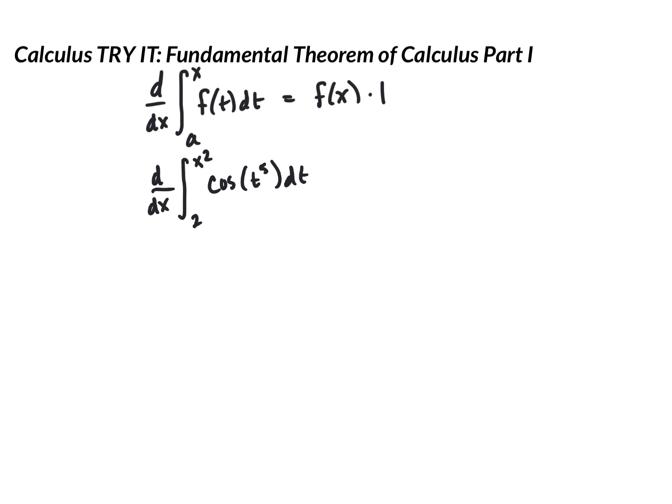So, here, if we are asked to find the derivative of the integral from 2 to x squared of the cosine of t to the 5th power, the easiest way to do this is just to say, well, it's going to be that original function, but we're going to have plugged x squared, the bound, into the function. It's still to the 5th power because it was t to the 5th. And then we're going to multiply by the derivative of that bound, which was 2x.